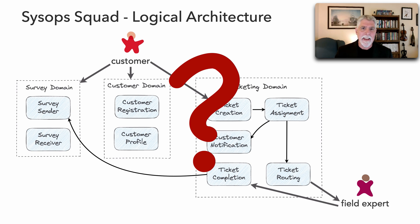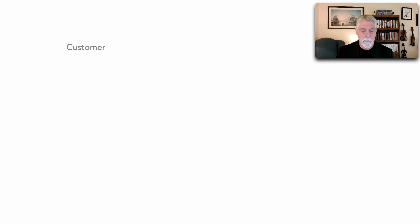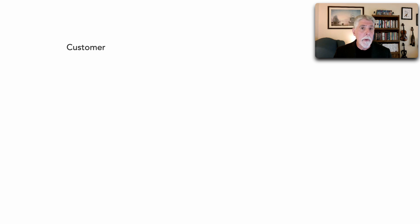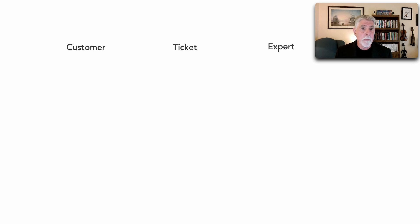Let me show you a technique that I do not recommend. We can ask: where do I start? I've got a blank screen. Well, we could start by thinking about the major entities that exist in the SysOps squad — we have customers, we have tickets that they create, and then experts that go out in the field and fix the problem. These are the three primary entities that the SysOps squad application deals with. It's a trouble ticket system where customers enter trouble tickets and field experts go out and fix their problem.